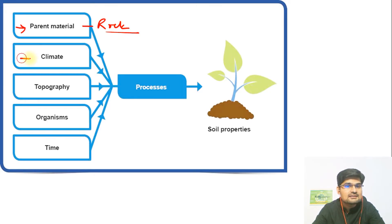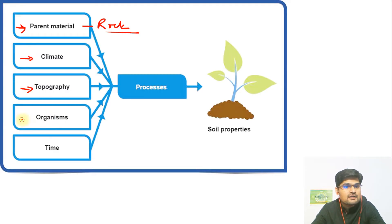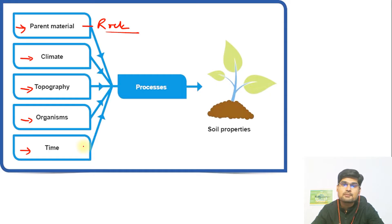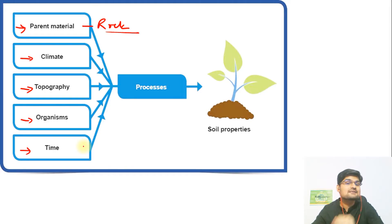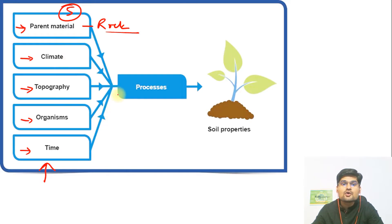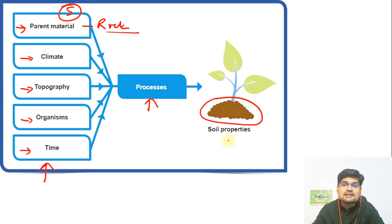The second factor is climate. The third factor is topography, and the fourth factor is organisms — that is where the organic component comes into the soil. The fifth and last factor is time, which is the most important of all, because soil does not form in a day. It takes millions of years to form a layer of soil. These five factors undergo different processes to form various soils with their unique properties.